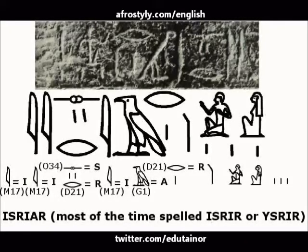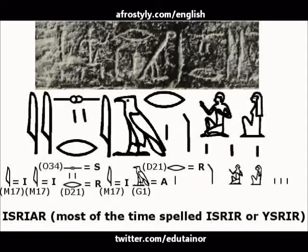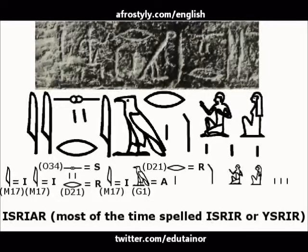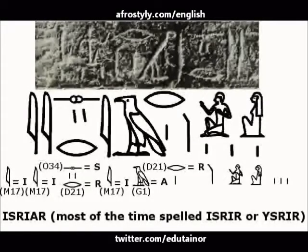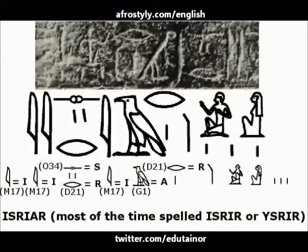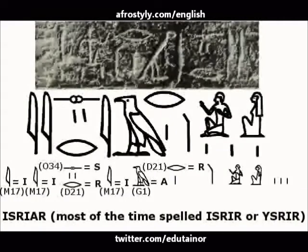It's not the whole sentence, but that's the part that we are interested in now. Some of those symbols — you probably noticed that there is no description, no translation, like which letter it means — because it doesn't actually mean a letter; it's just to give a better definition. It's an ideogram. Basically, what it spells is 'isriar' or 'isrir,' and that's how it's spelled most of the time.